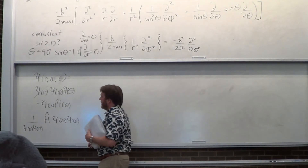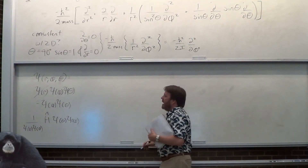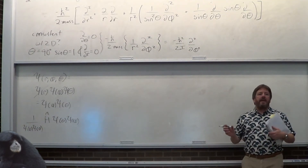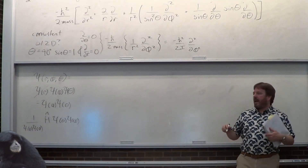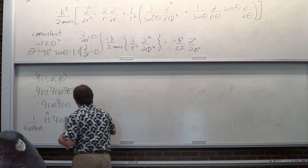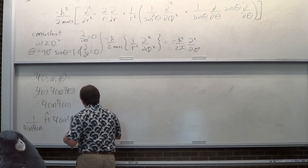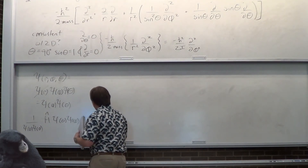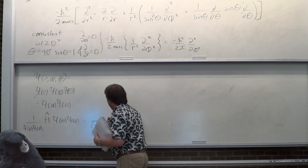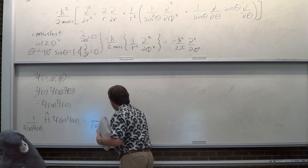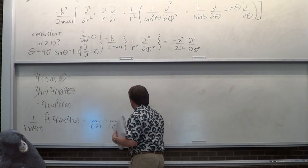You apply it and you know this is hard because there's a bunch of derivatives. What you're looking for is to find this comes in the form of stuff with only theta in it and stuff with only phi in it, equaling some constant.